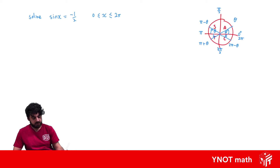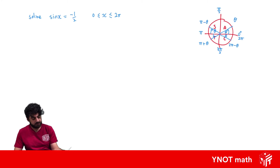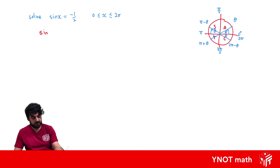The first step in solving a trig equation is to find the base angle. Once we have our trig function isolated and equaling a constant, we just take the inverse of that trig function applied to that constant. If there is a negative, like in this case, we disregard it just to get our base angle. Inverse sine of a half is π/6, so this is our base angle.